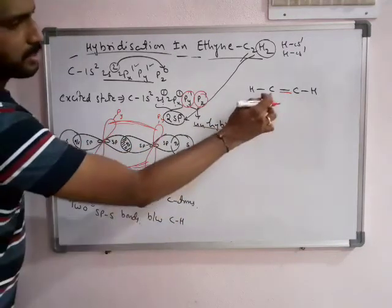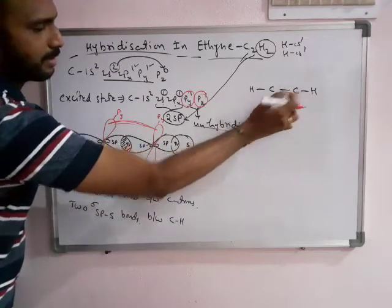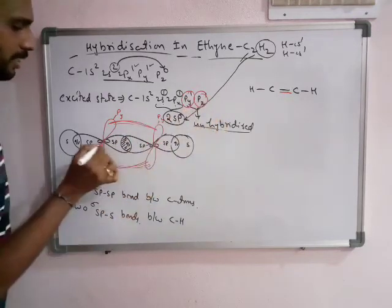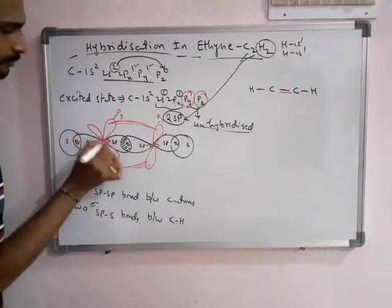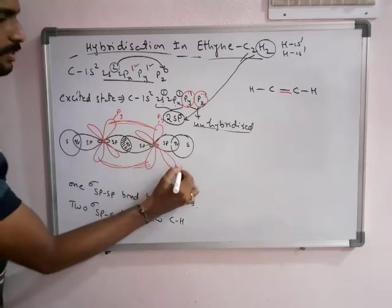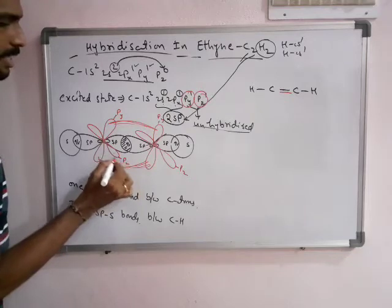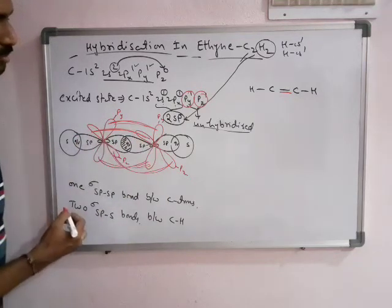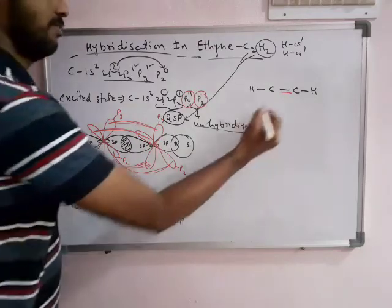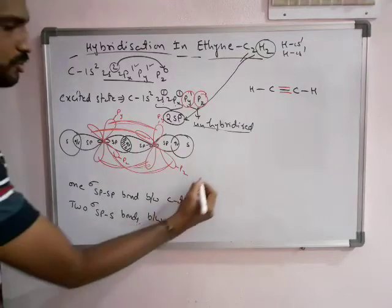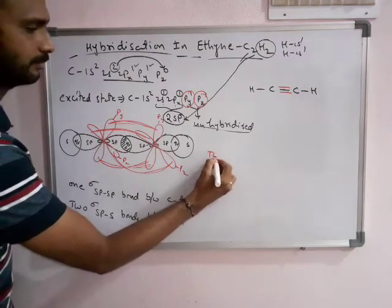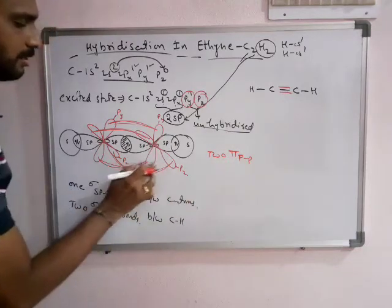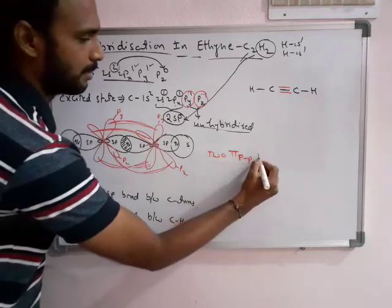Now each carbon still has three bonds and one more unhybridized orbital remaining — the Pz orbital. The Pz of the first carbon and the Pz of the second carbon also have unpaired electrons. Their sidewise overlapping also forms another pi bond. So there is a formation of two pi pp bonds — formed by the overlap of p orbitals — between the carbon atoms.